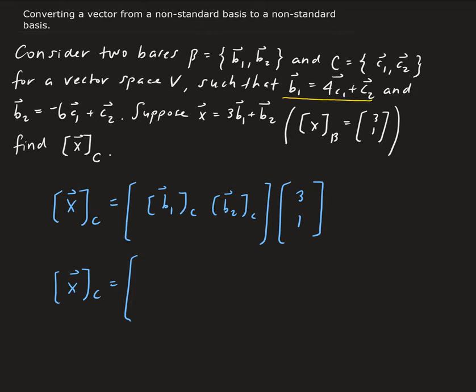So that's going to go into here, so 4, 1. b2 is a linear combination of c1 and c2. So that's going to give us minus 6 and 1.